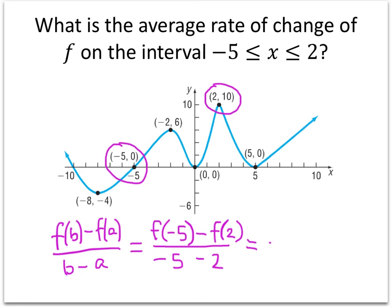Alright, so on the bottom of my fraction, I have negative 7. What do I have on the top of my fraction? So what's f of negative 5? Well, f of negative 5 is the y value when x equals negative 5. When x equals negative 5, y is 0. What about f of 2? Well, f of 2 is the y value when x equals 2. And when x equals 2, y equals 10.